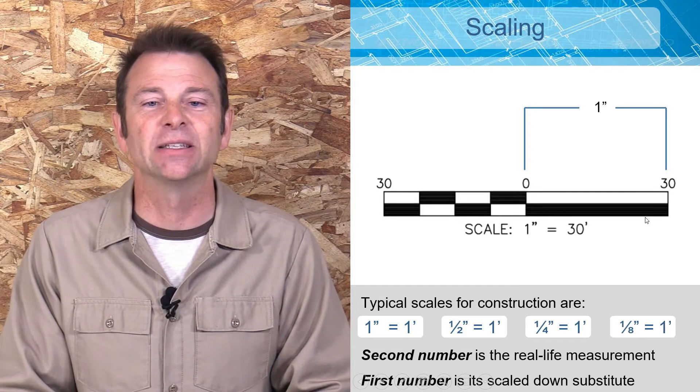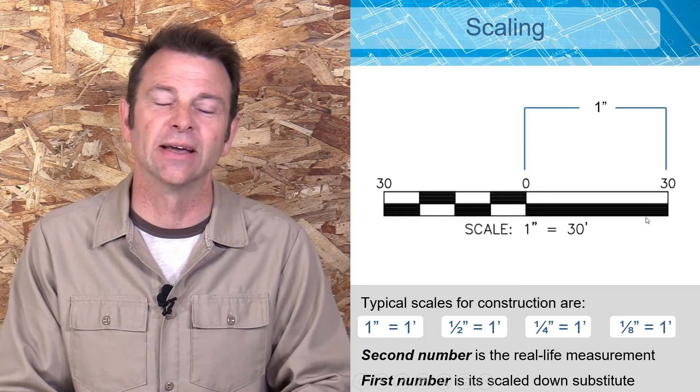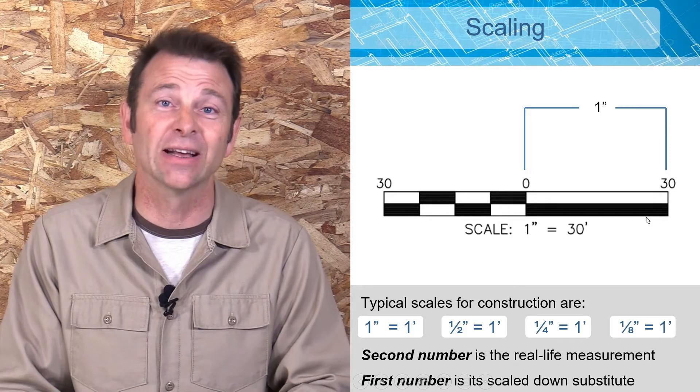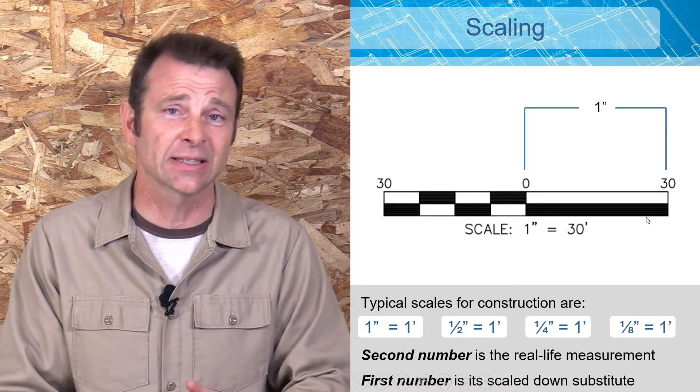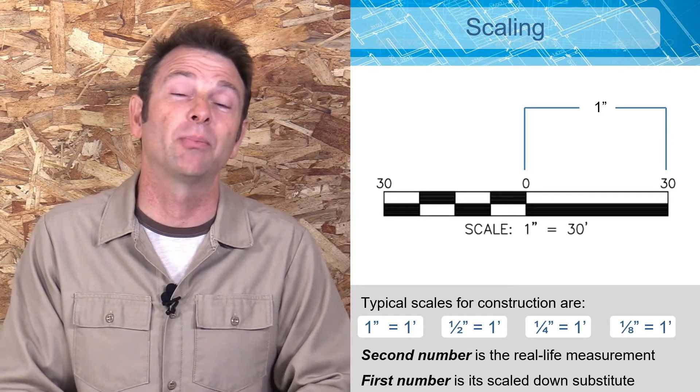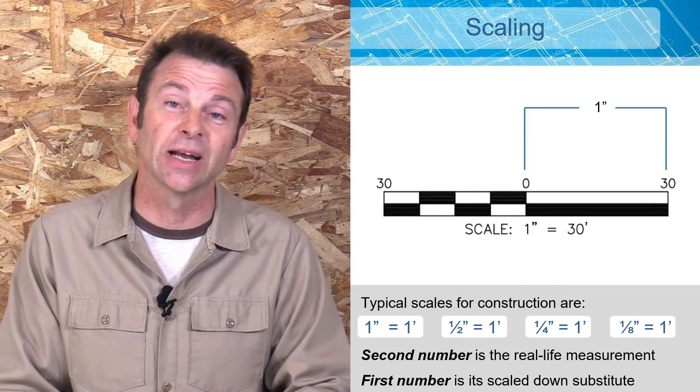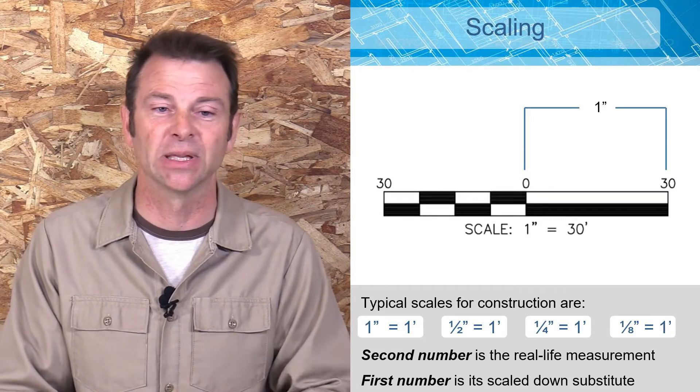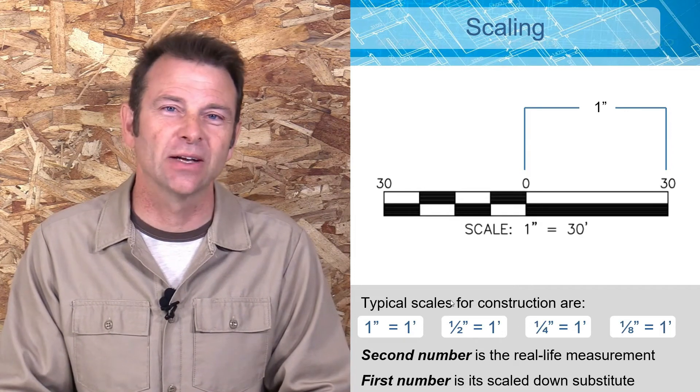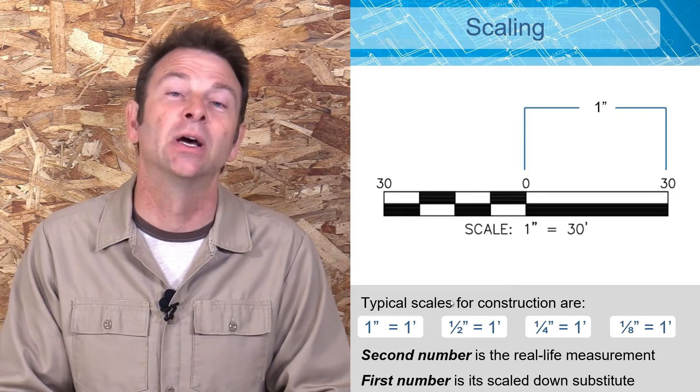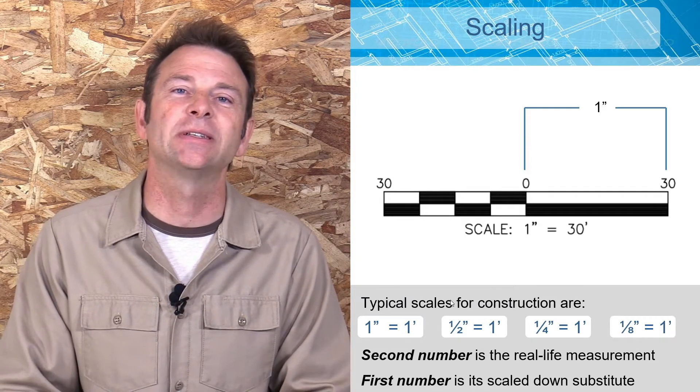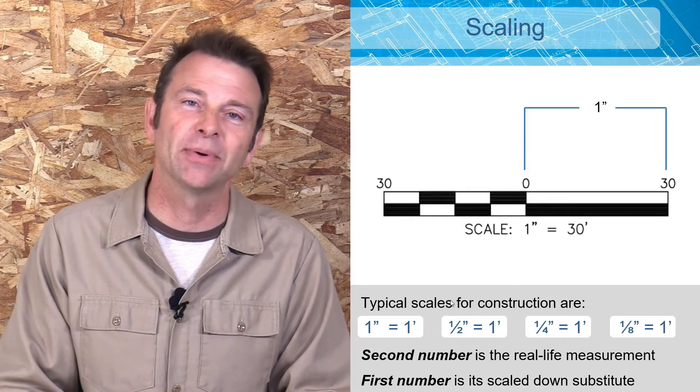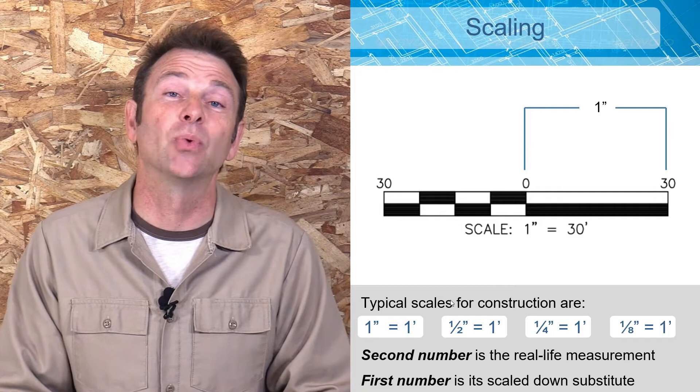In this case, our scale is one inch equals thirty feet. So if we laid a ruler on this set of plans, every inch is going to equal thirty feet in real life. This is all that scale is—it's a very simple concept. It gets confusing when we come up with different scales and we try to transfer that to our plans or go back and forth from real life to plans.